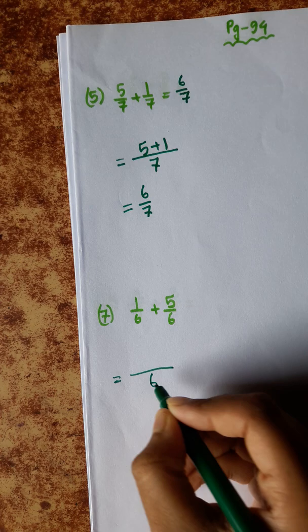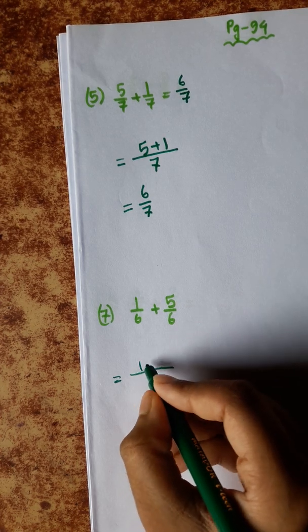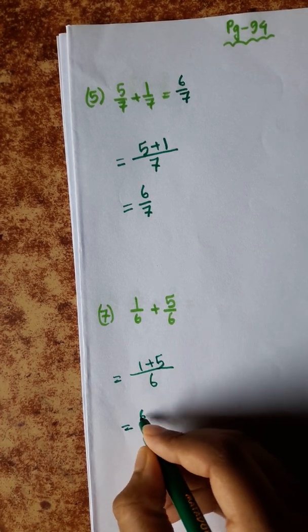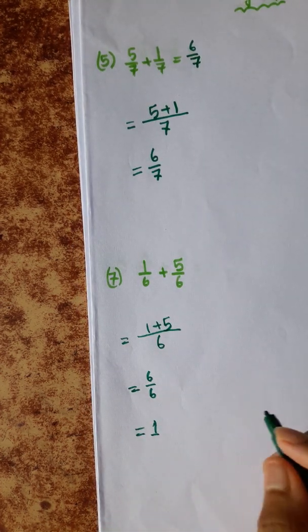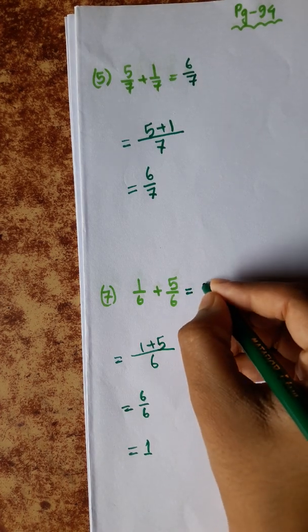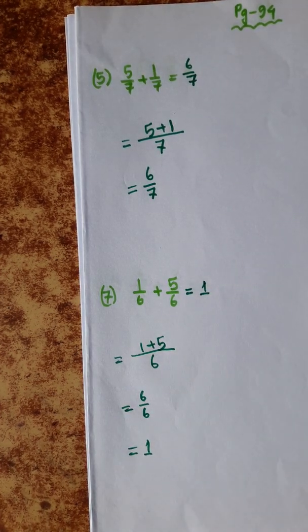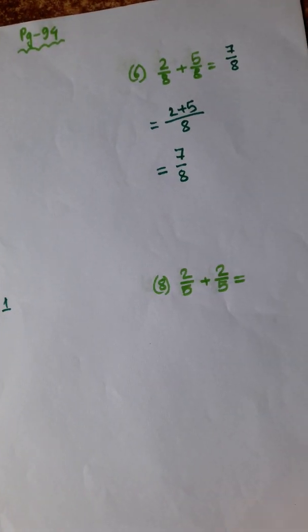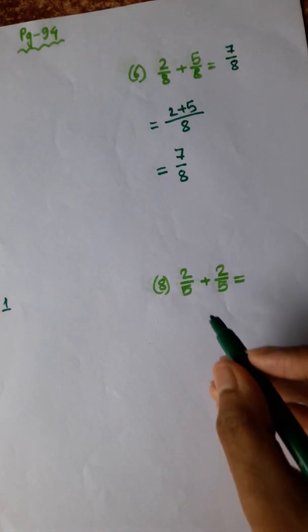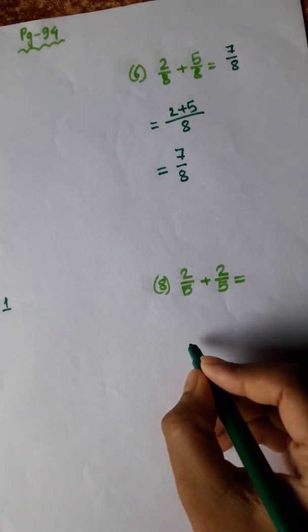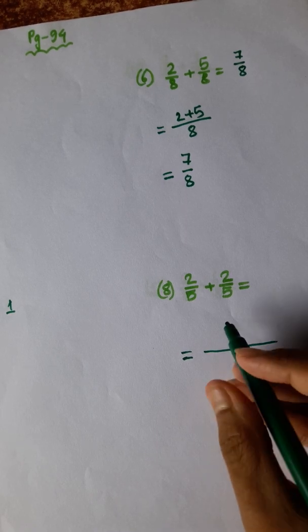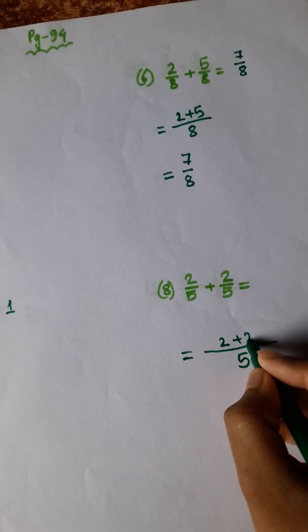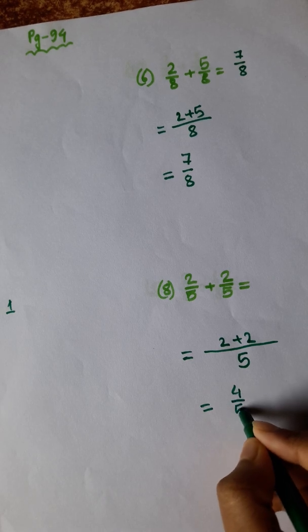Number 7: numerator 1 plus 5 is 6 by 6, and 6 by 6 cancels to give 1. Number 8: denominator 5, same. Numerator 2 plus 2 is 4 by 5.